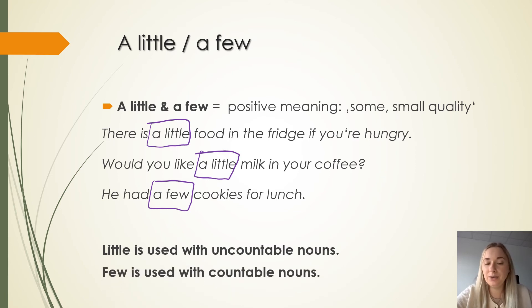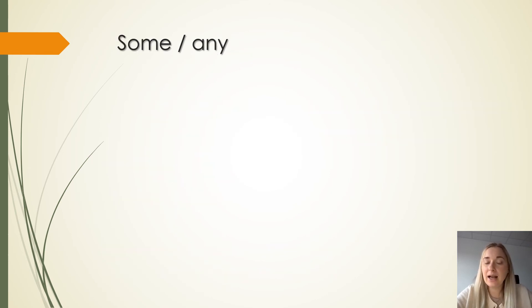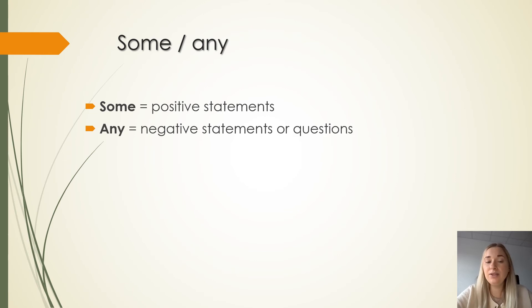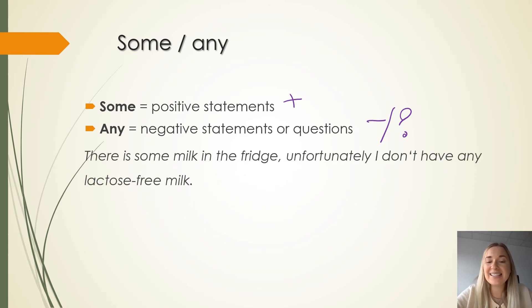Some and any. Some is used with positive statements, any is used with negative statements. Let's take a look at the examples. There is some milk in the fridge. Unfortunately I don't have any lactose-free milk. So we have some milk, this is a positive statement. There is some milk in the fridge. Unfortunately this is already a negative statement. I don't have any lactose-free milk.